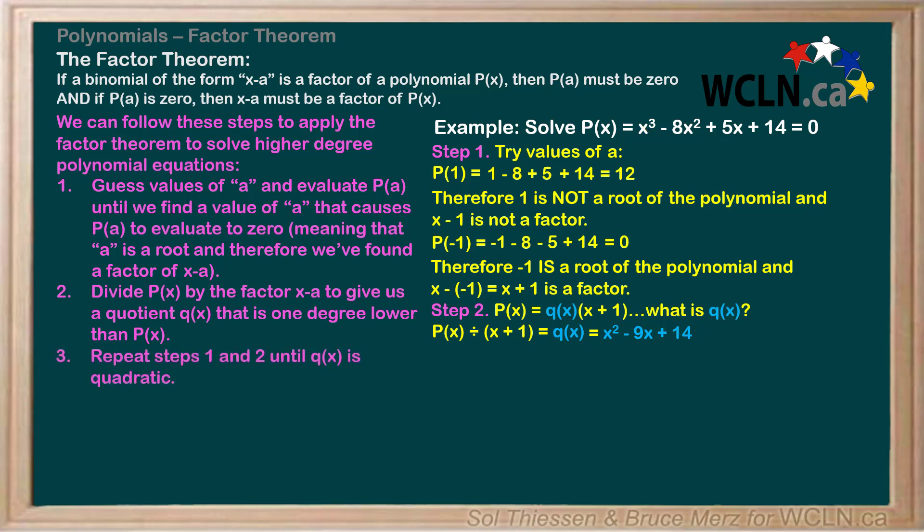On to step 3, which is to repeat steps 1 and 2 until q(x) is quadratic, or of degree 2. In this case, q(x) is quadratic already, so we just rewrite the original cubic as the product of q(x) and the factor we found in step 1. However, if our original function had been degree 4 or higher, we would need to apply steps 1 and 2 to the q(x) expression we just found. You'll see an example of this in a later video.